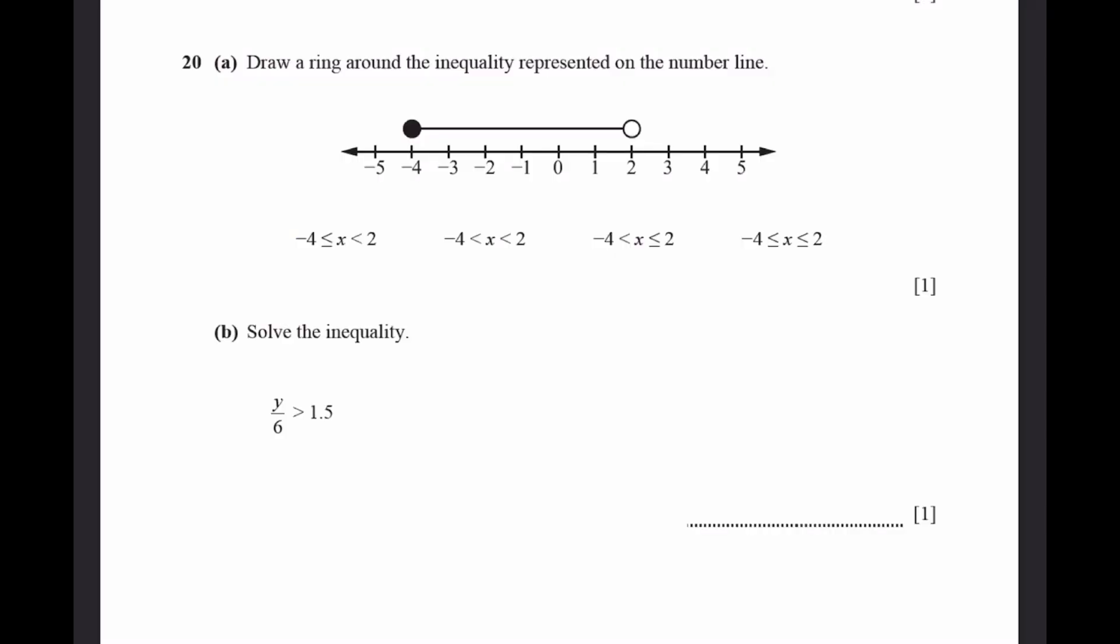Question 20a. Ring around the inequality represented on the number line. We can see that at minus 4, we have a black circle or shaded circle, which means it has an equal to sign. At the number 2, it's a white circle, which means there's no equal sign. So, the answer is the first option. Part b. Solve the inequality, y by 6 is greater than 1.5. That just means y is greater than 1.5 into 6. So, y is greater than 9.